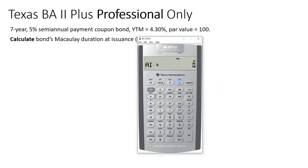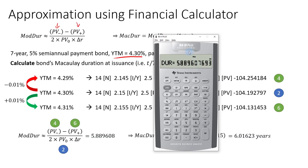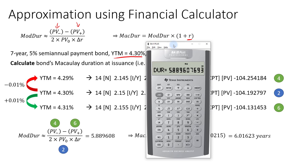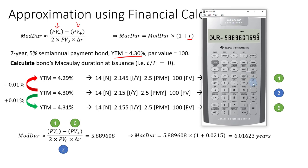Scrolling down, accrued interest is 0 because this is at issuance. Scrolling further, you see 5.889608, which is the modified duration of the bond. To convert to Macaulay duration, multiply by 1 plus the yield per period of 2.15%, giving 6.01623 years.